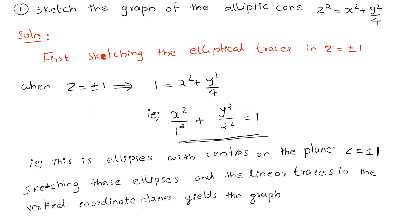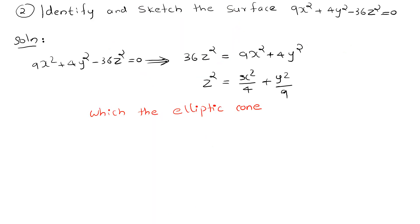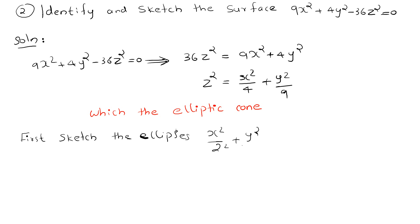First, sketch the elliptical traces at z equals plus or minus one. The trace is x squared by 2 squared plus y squared by 3 squared equals one. Then, z equals minus one gives the same ellipse on the lower plane. Sketching these ellipses and the linear traces in the vertical coordinate planes yields the graph of this elliptic cone.